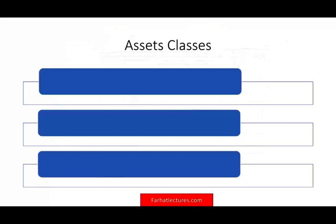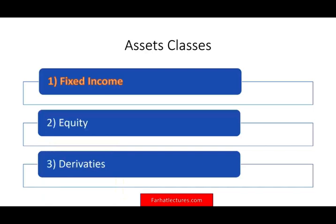Asset classes from a broad perspective can be broken down into three categories: fixed income, equity securities, and derivatives. Under fixed income, we have the money market, which is short-term, and the capital market. Both of these are already covered, so fixed income is done. In this session, I will work on the equity section.